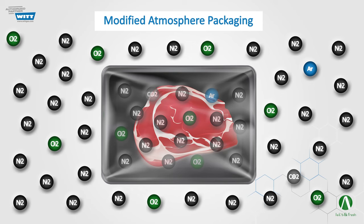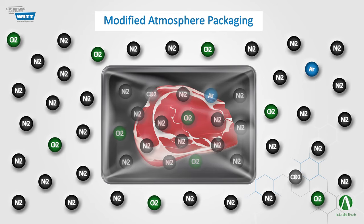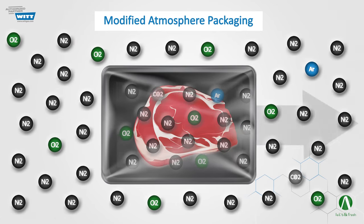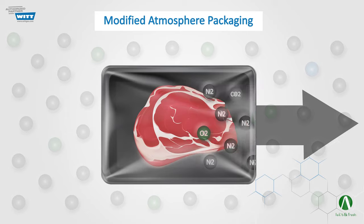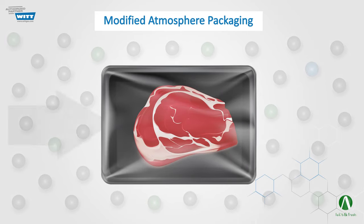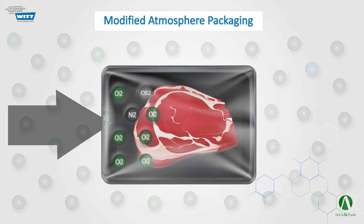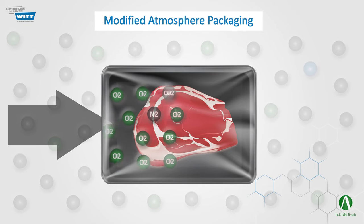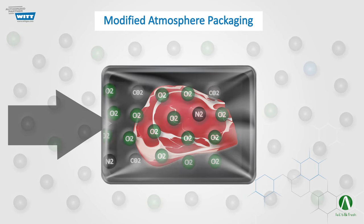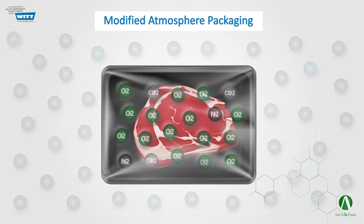To figure out what MAP exactly is, let's start with the basic concepts. Simply put, in this method, we modify the atmosphere surrounding a food product by removing the air inside of its package and then flushing gases that are safe for both food and customers' health to control the biochemical, enzymatic, and microbial actions without temperature or chemical treatments.